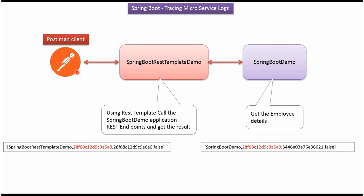Here you can see the Postman client. Using the Postman client we will send a request to the springboot rest template demo microservice, and from this microservice we will send a request to the springboot demo microservice. We will see how to trace the logs.